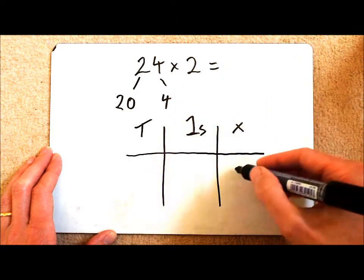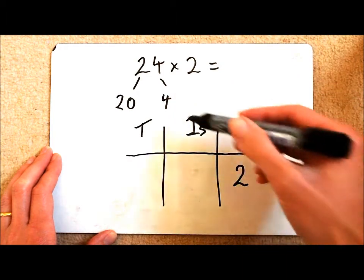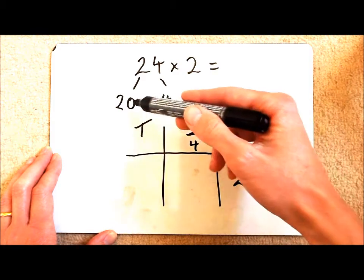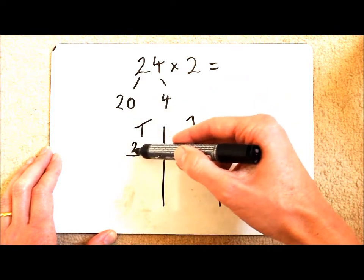So I'm multiplying by the number 2. I have 4 ones and I have 2 tens or 20.